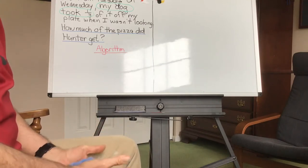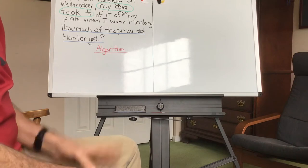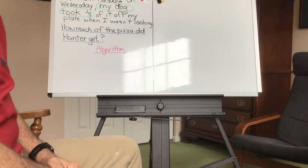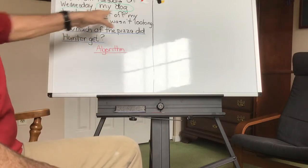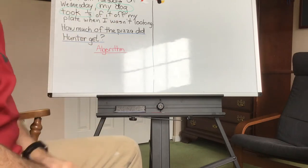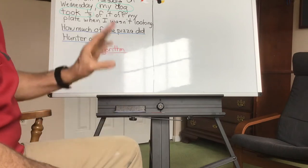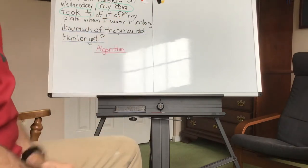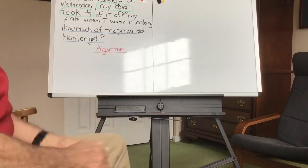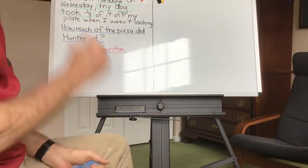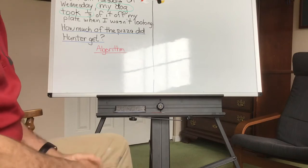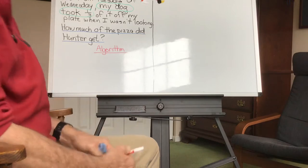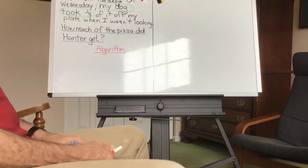I've already gone ahead and annotated the important quantities. Half of the pizza left, and my dog took one third of it. So those are the important quantities and relationships. And I've already underlined the question, so I want to know how much of the pizza did Hunter actually get? Let's build on what we did the other day. First of all, let's try to show this. How can I look at these quantities? How can I show them?